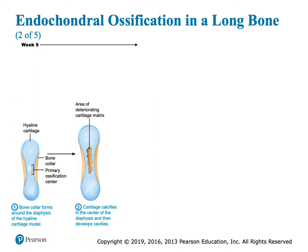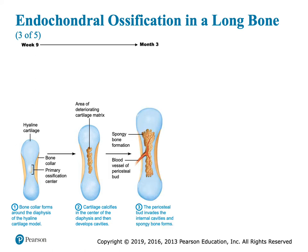Then that cartilage is going to get hard — it's going to calcify. The center is going to start to die, causing a pocket — a cavity. Mesenchyme can differentiate into periosteum, so we're going to get some periosteum with that new bone. Blood vessels are also going to come from the mesenchyme, penetrate into that new bony collar, go into that cavity, and it's going to start to form spongy bone.